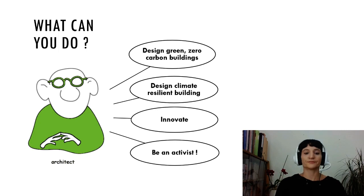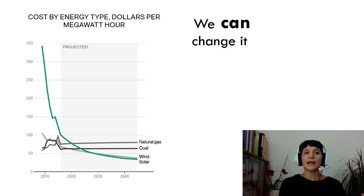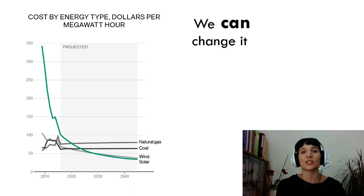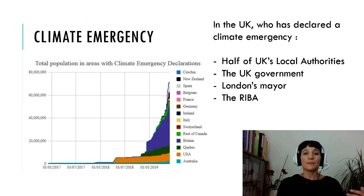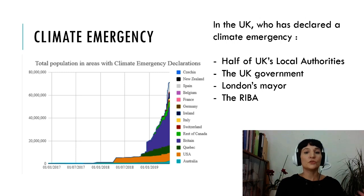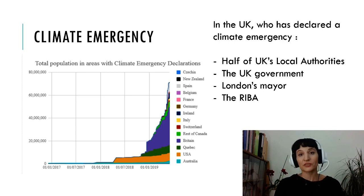The good news is that we can change this. From a technical point of view, we have the means to tackle climate change. Renewable energy such as solar and wind energy is becoming increasingly cheap and is competing against fossil fuels in terms of economical viability. In addition, many organizations are declaring a climate emergency — including half of the UK's local authorities, the UK government, the London Mayor, and the Royal Institute of British Architects. Now I will present some of the work that students here at UEL are doing to respond to the climate emergency.